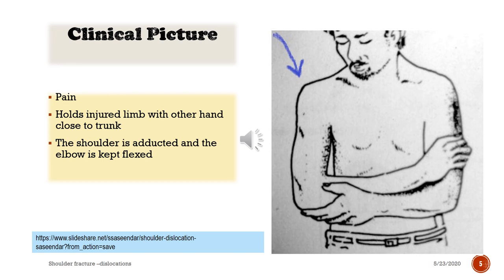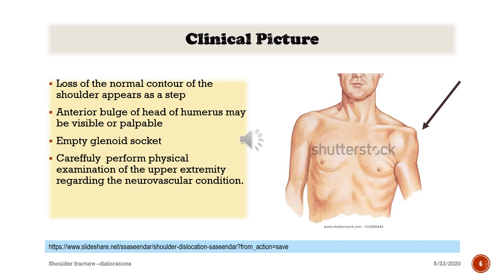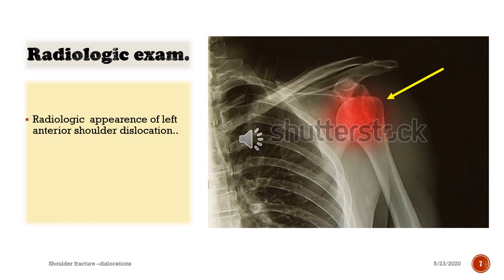Clinical picture includes pain. Technical appearance on physical examination: loss of normal contour of the shoulder appears as a step. There is an anterior bulge of the head of humerus that may be visible or palpable, and an empty glenoid socket. Carefully perform a physical examination of the upper extremity regarding neurovascular condition. Radiologic appearance of left anterior shoulder dislocation can be observed.